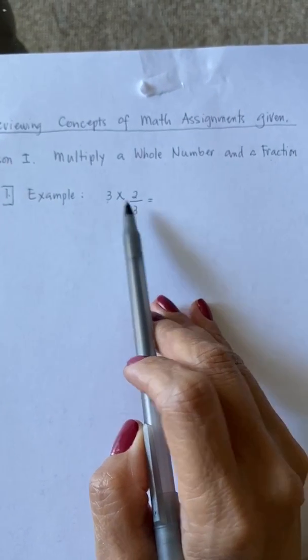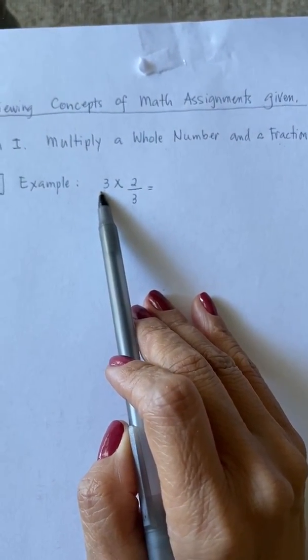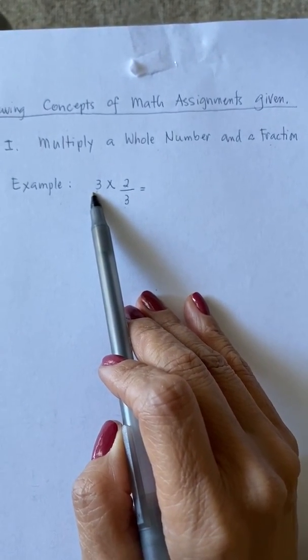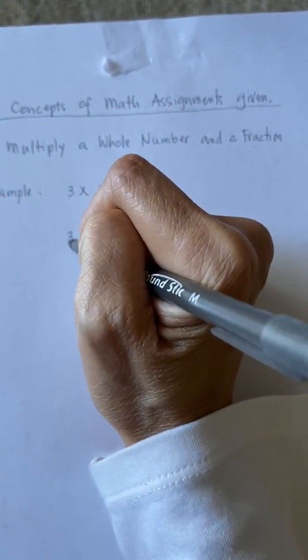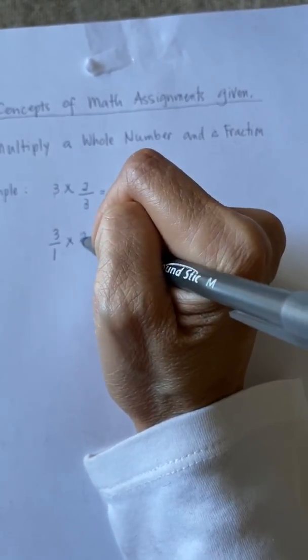2 thirds is the fraction and 3 is your whole number. To make 3 a fraction, we are going to write 1 as always as the denominator. So we are going to write it this way: 3 over 1 times 2 thirds.